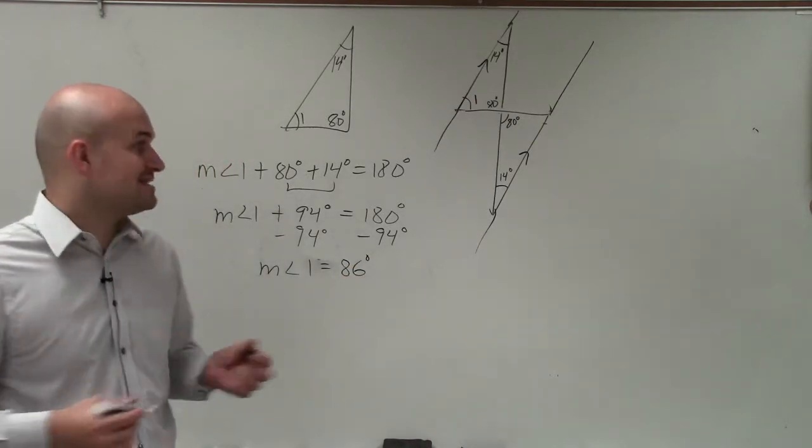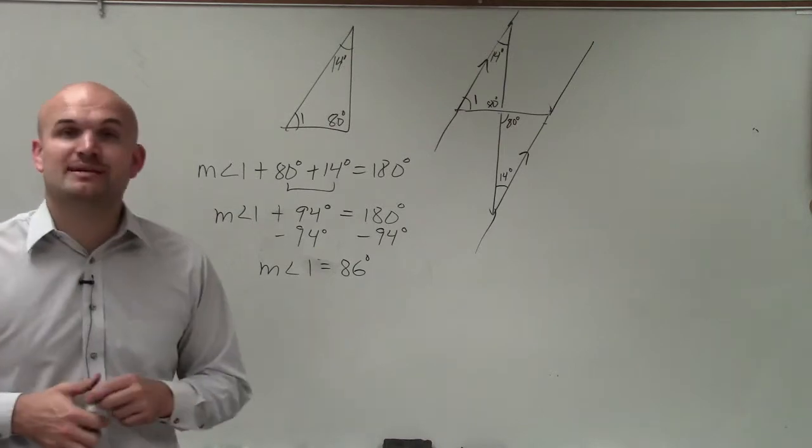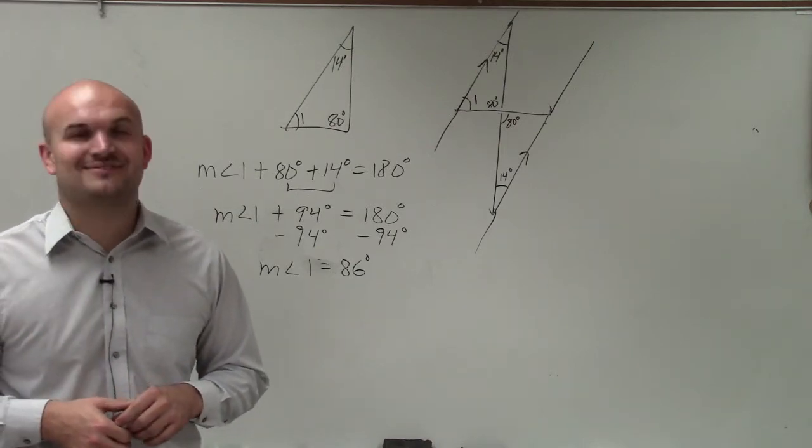So there you go, ladies and gentlemen, that is how you use angle relationships to help you determine the missing angle of a triangle. Thanks.